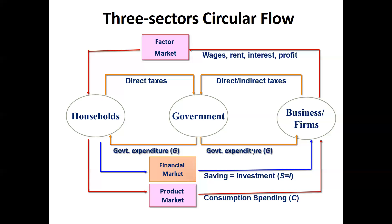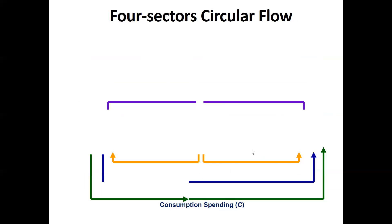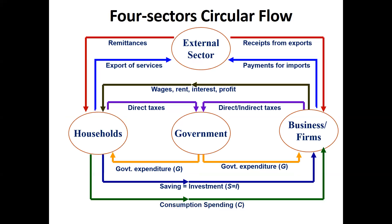I hope the three-sector circular flow is clear. Next we come to the four-sector circular flow. The external sector was missing in the three-sector economy, and both the external sector and government sector were missing in the two-sector economy. So in the four-sector economy we have household, business firm, government — and the external sector means we are talking about beyond political boundaries, that is, foreign countries.